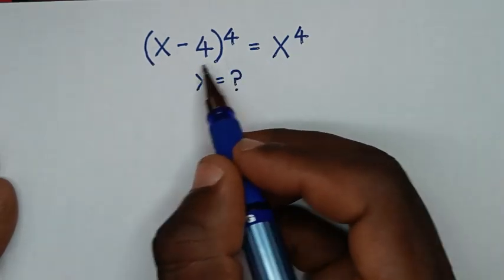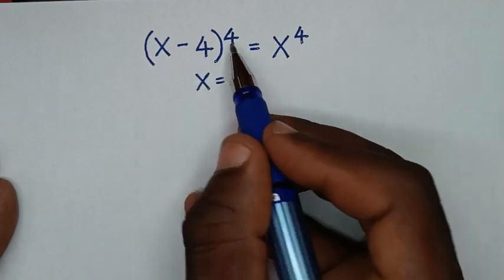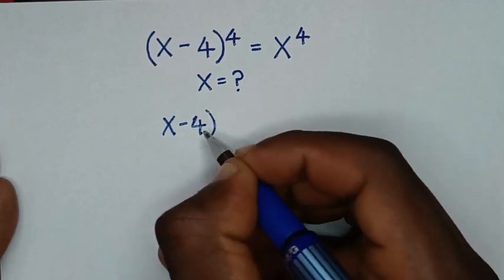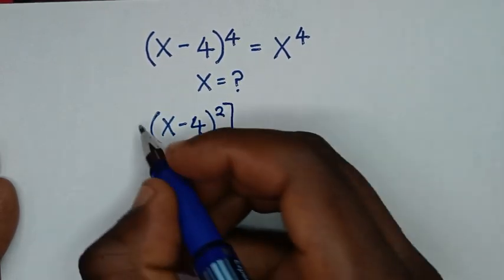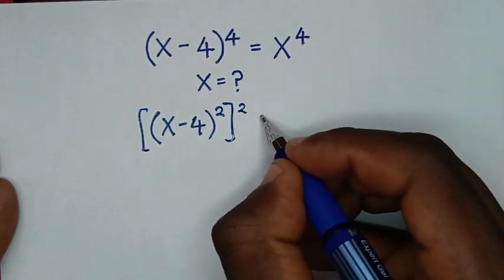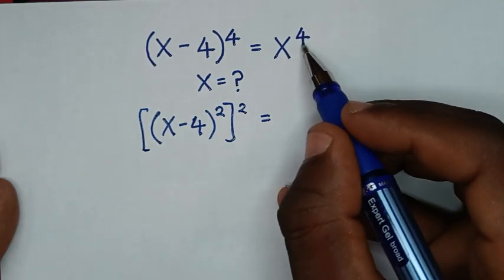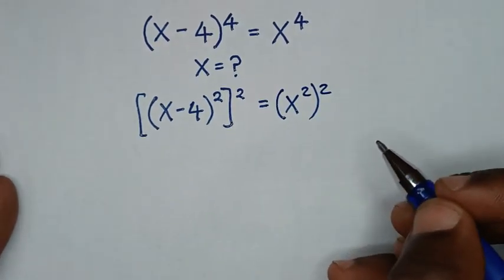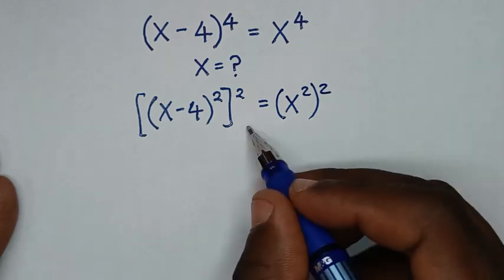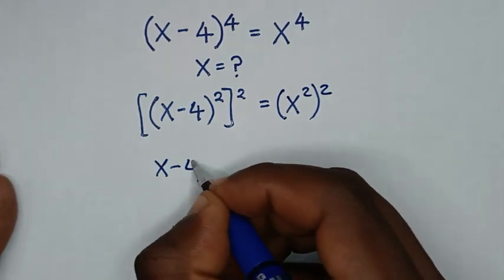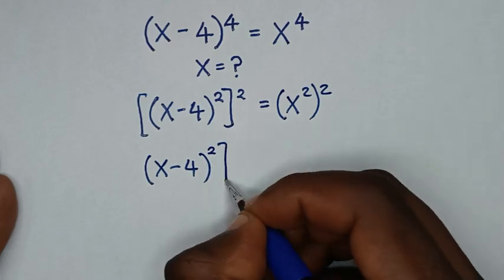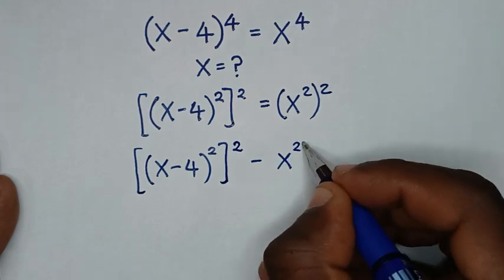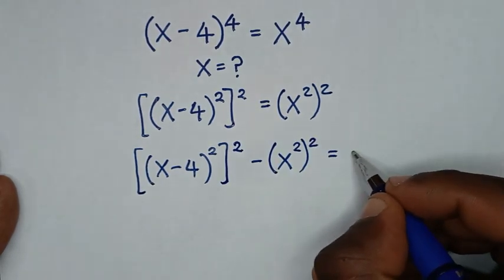In the first step, on the left side, (x minus 4) bracket to the power 4, we make it into squares. So it will be (x minus 4) bracket squared, then bracket again squared. Then it is equal to x to the power 4 written as (x squared) bracket squared. Then we'll take this (x squared) bracket squared to the left side, so it will be (x minus 4) squared, bracket squared, minus (x squared) bracket squared is equal to 0.